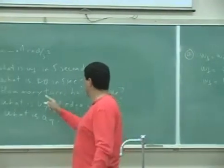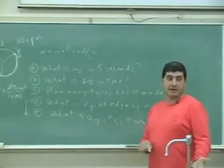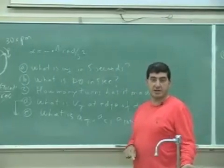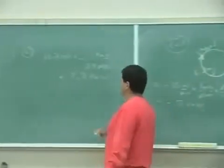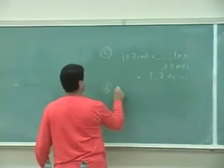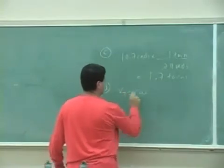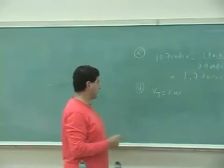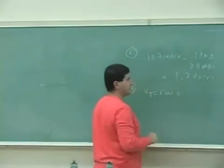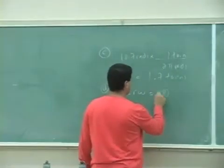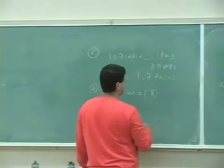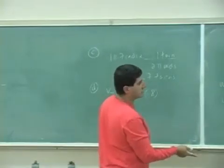Okay so 1.7 turns. So now what is v tangential? Now you use v tangential is r omega. So now you have, you multiply the radius times the omega which we already got.